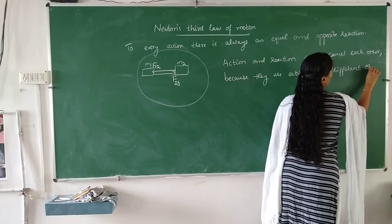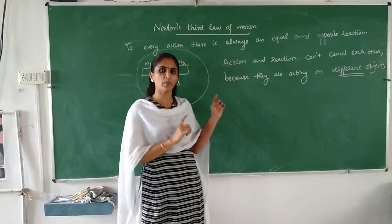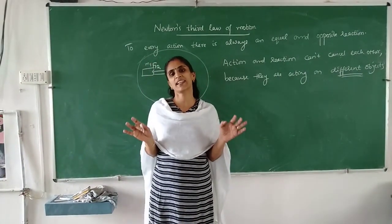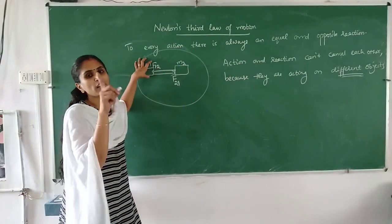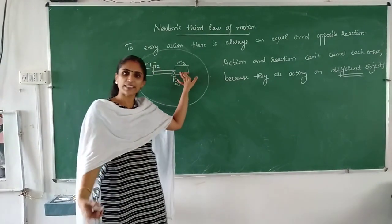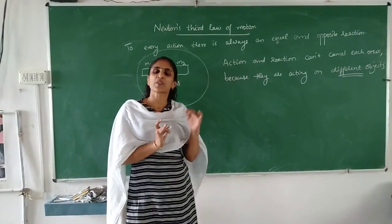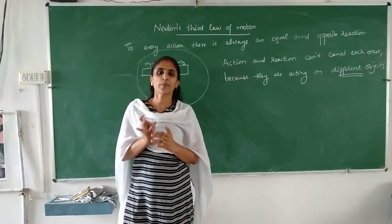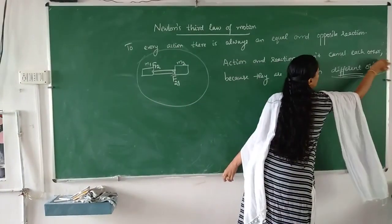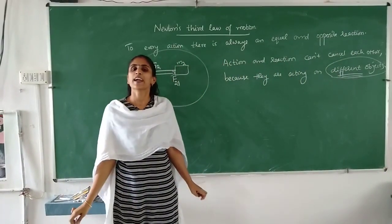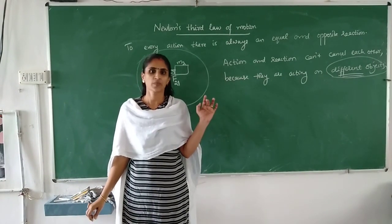Action and reaction cannot cancel each other because they are acting on different objects — they are not acting on the same object. If they were acting on the same object, the forces would cancel. But since they act on different objects, action and reaction, even though they are equal in magnitude and opposite in direction, cannot cancel each other.